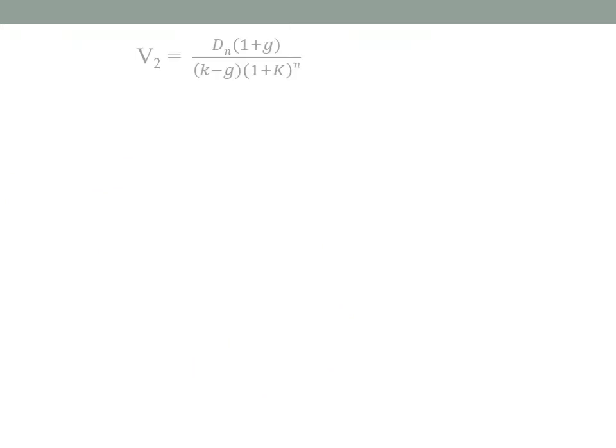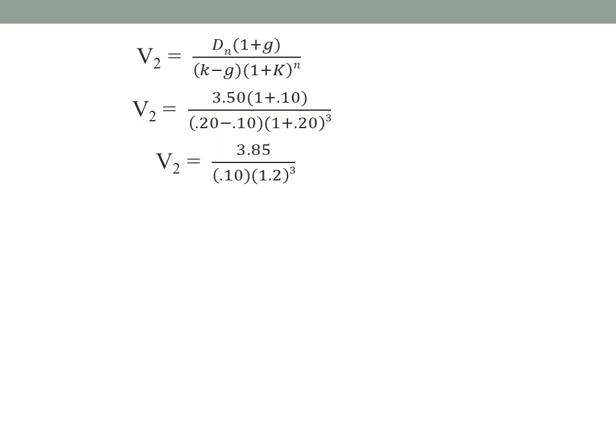Next, V2 is calculated using the formula: Dn multiplied by (1 plus g), divided by (k minus g), into (1 plus k) raised to n. Substituting values: V2 equals 3.50 into (1 plus 0.10), divided by (0.20 minus 0.10), into (1 plus 0.20) raised to 3. This gives 3.85 divided by 0.10, divided by 1.2 raised to 3. Solving this gives V2 equal to Rs. 22.28, which is the present value of dividends during the constant growth period.